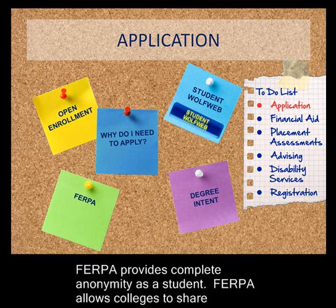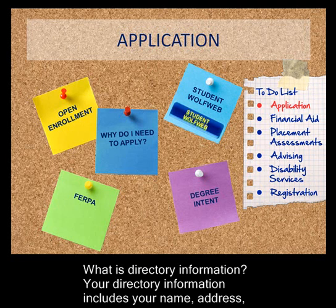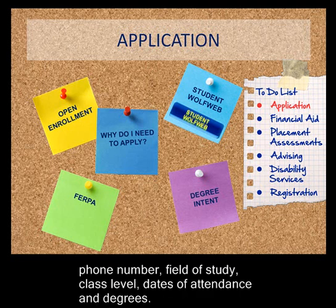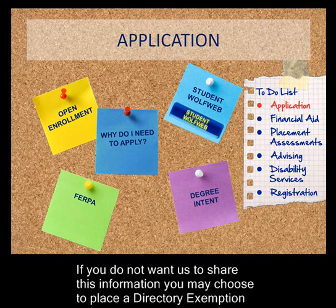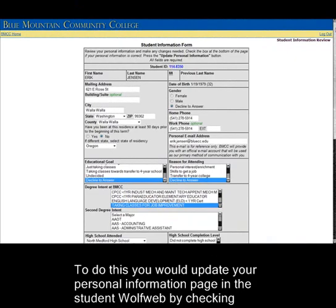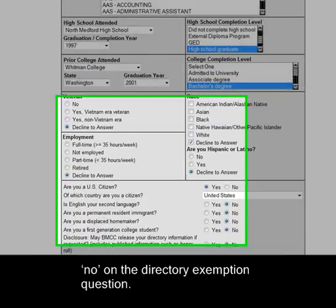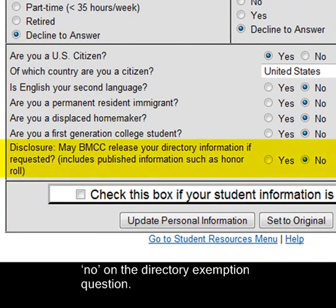FERPA allows colleges to share directory information without a student's permission. Your directory information includes your name, address, phone number, field of study, class level, dates of attendance, and degrees. If you do not want us to share this information, you may choose to place a directory exemption on your student records. To do this, you would update your personal information page in the student WolfWeb by checking No on the directory exemption question.